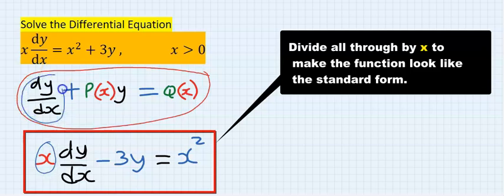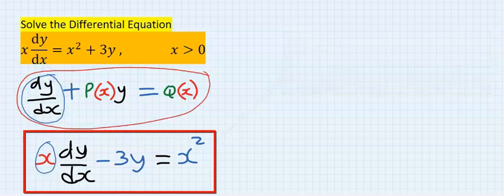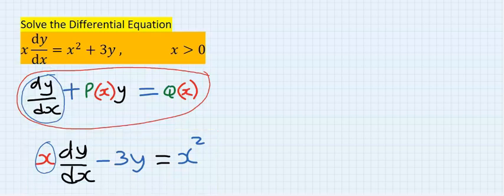in the standard form the x is alone. To eliminate the x we are going to divide all through with x.